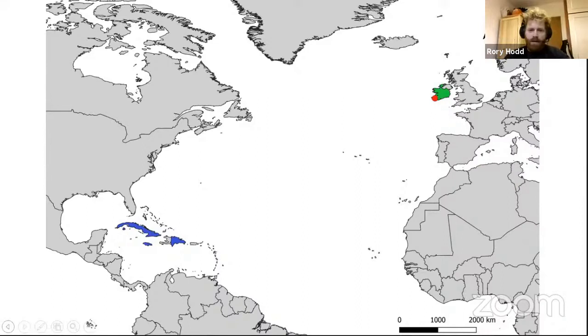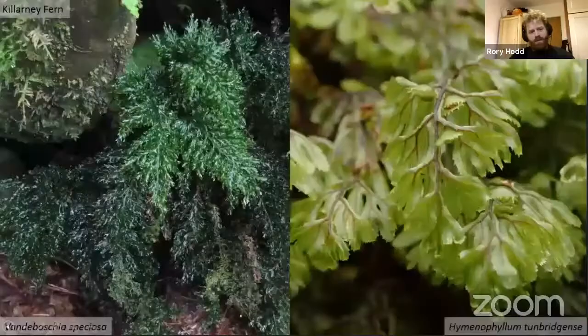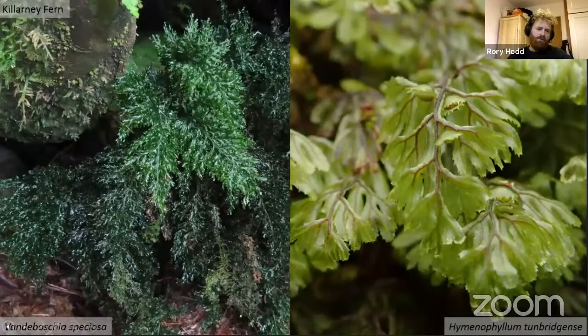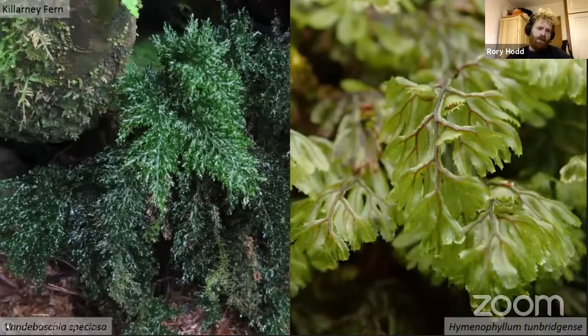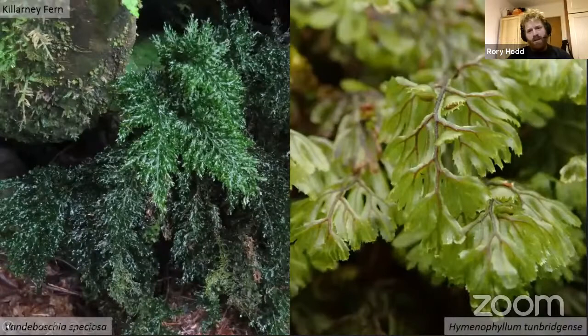The filmy ferns, which includes the Killarney fern, are basically northerly outliers of a tropical group. Although they're now more widespread in Europe than just Ireland and the far oceanic west, they always need oceanic conditions. They must have come at some point by long-distance dispersal and then become established. Whether Stenogramitis has been here for a long time, or whether it will persist, are questions we can't really answer at the moment.